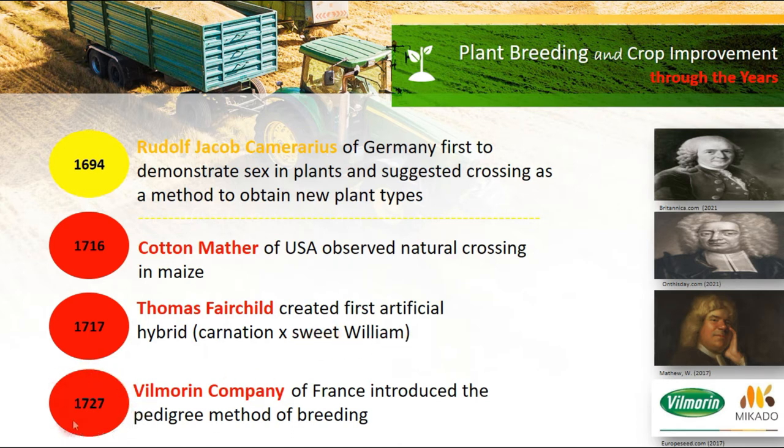In 1727, the Vilmorin Company of France introduced the pedigree method of breeding.